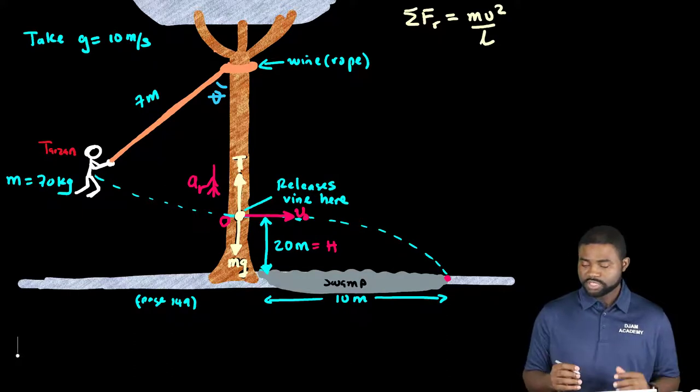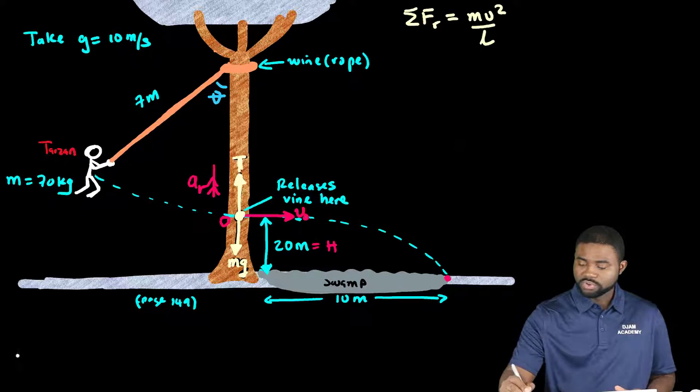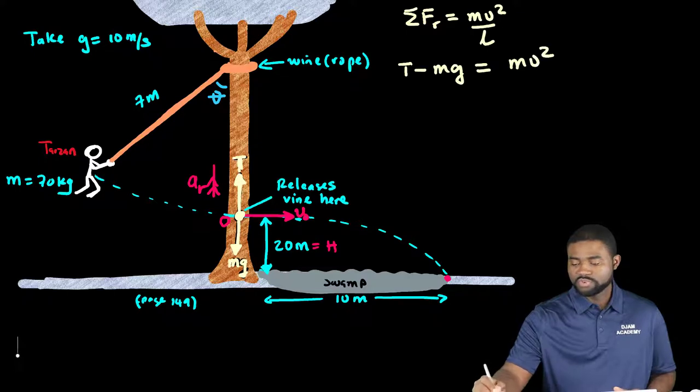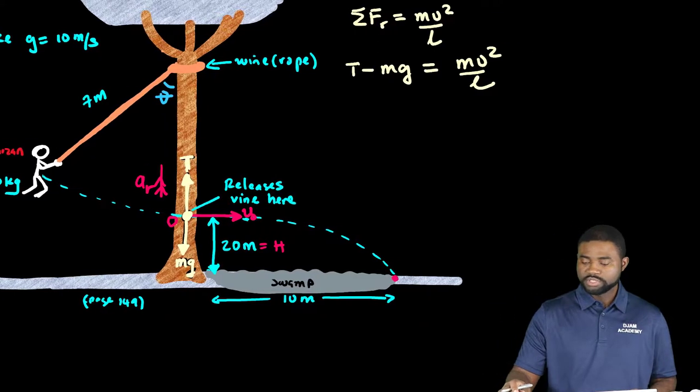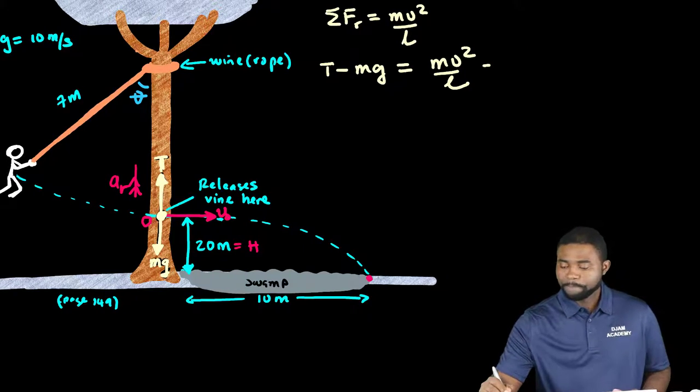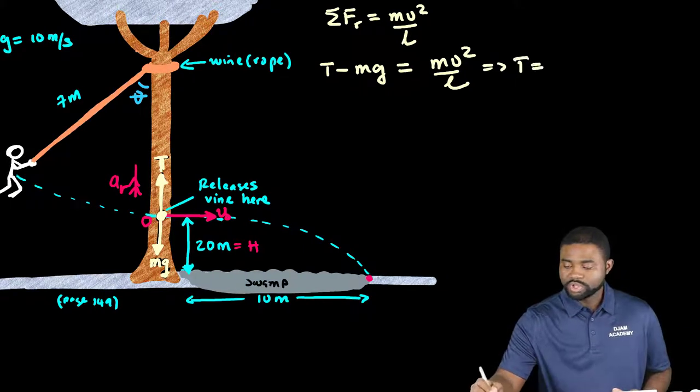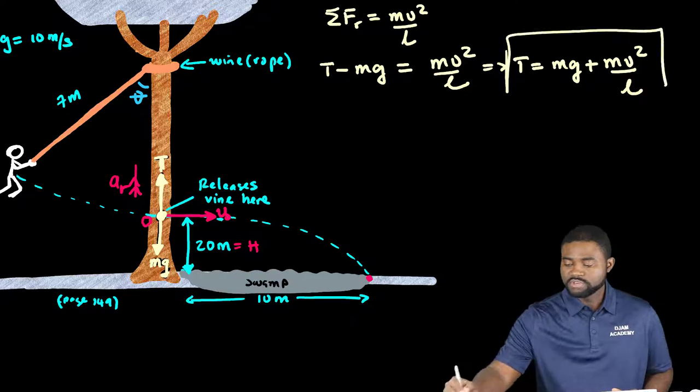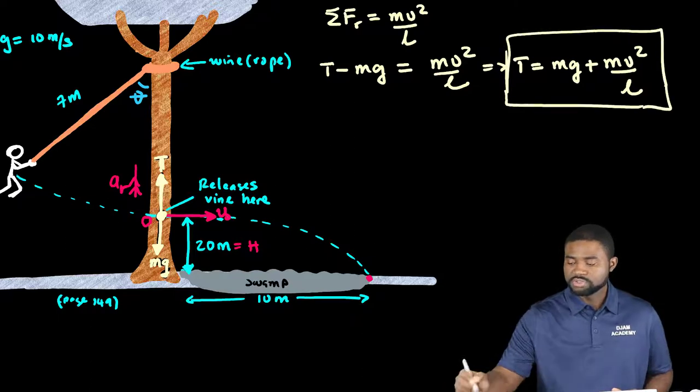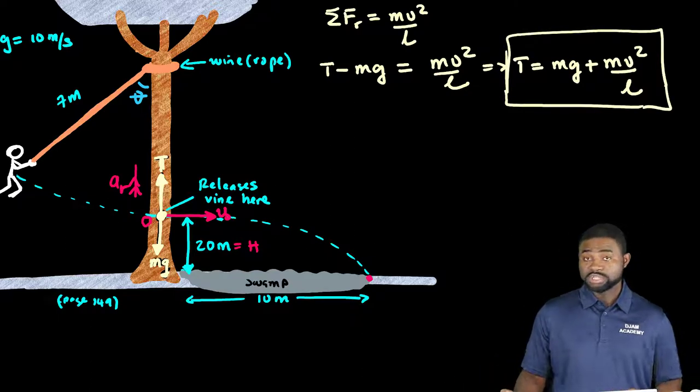So if we further expand Newton's second law we have T minus mg all of this should be equal to mv squared over l. So what this means is that T will be equal to mg plus mv squared all divided by l. This gives us the expression for the tension in the string.